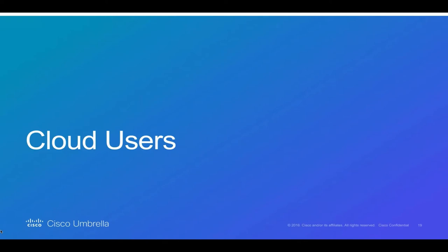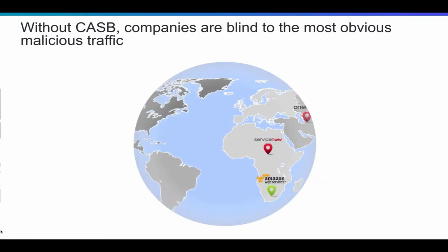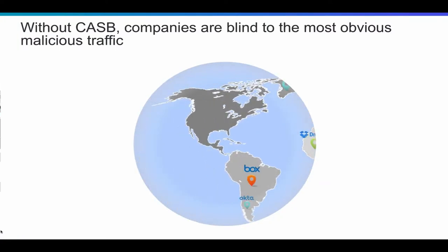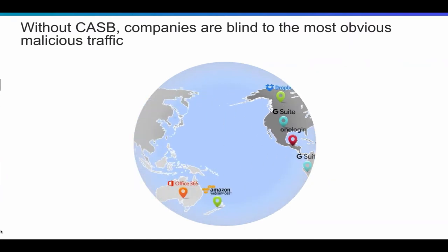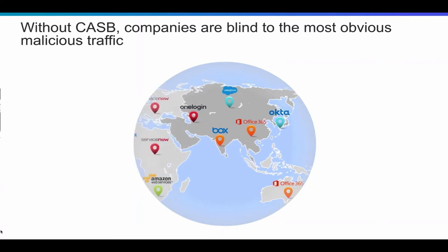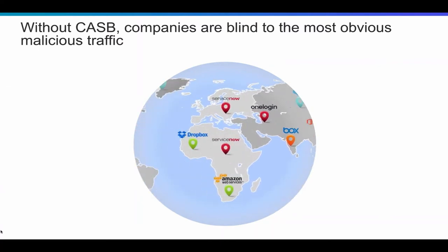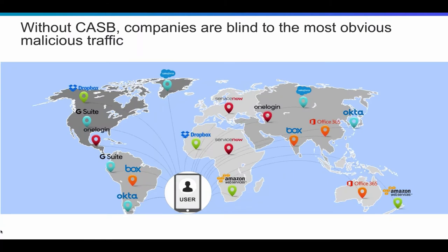Now we're going to dive a little deeper into these three use cases and showcase some of the insights gathered through working with customers and from our cyber lab. We have a dedicated team that takes anonymized data from our customer base and looks at trends, allowing us to give insights back to customers and gain intelligence around what's really going on in the cloud security market. Going back to users: without CASB — cloud access security brokers like CloudLock — companies are blind to the most obvious malicious traffic.